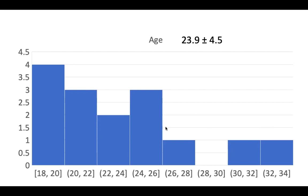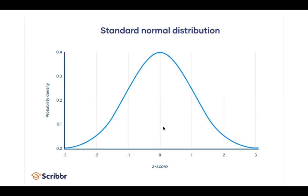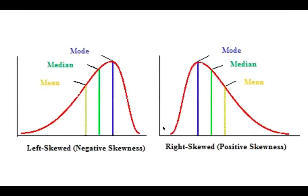We usually assume that large enough data will follow a normal distribution — the familiar bell curve. But sometimes data can be skewed one way or another. A quick way to tell this is by plotting the data in a histogram and comparing your mean, median, and mode, because the tails will pull the mean away from the median and away from the mode.